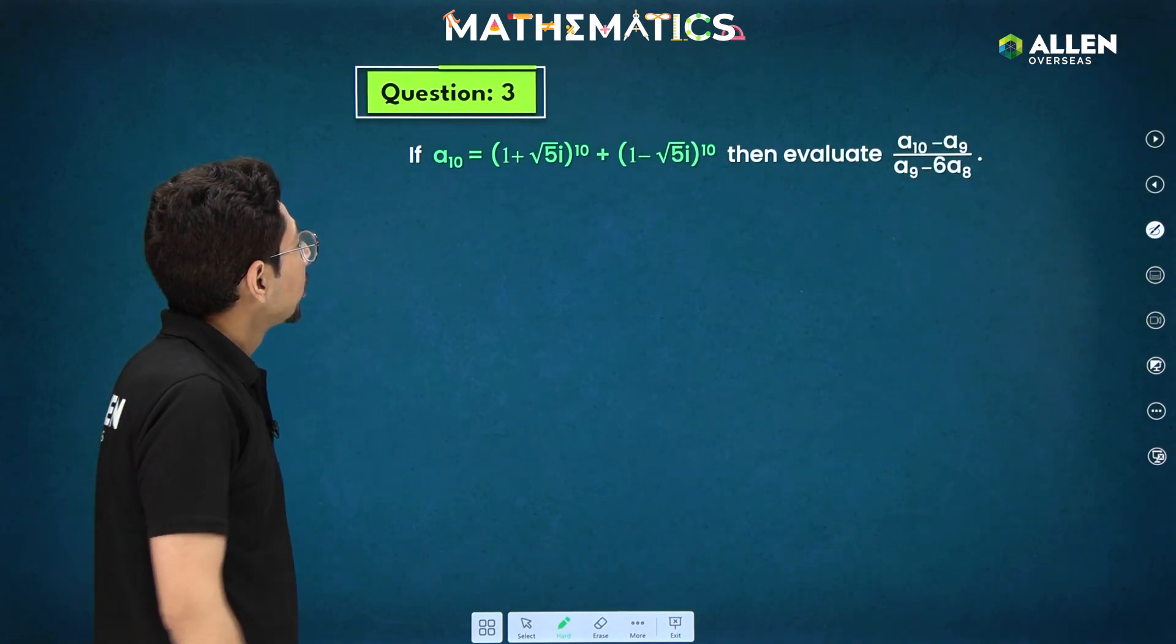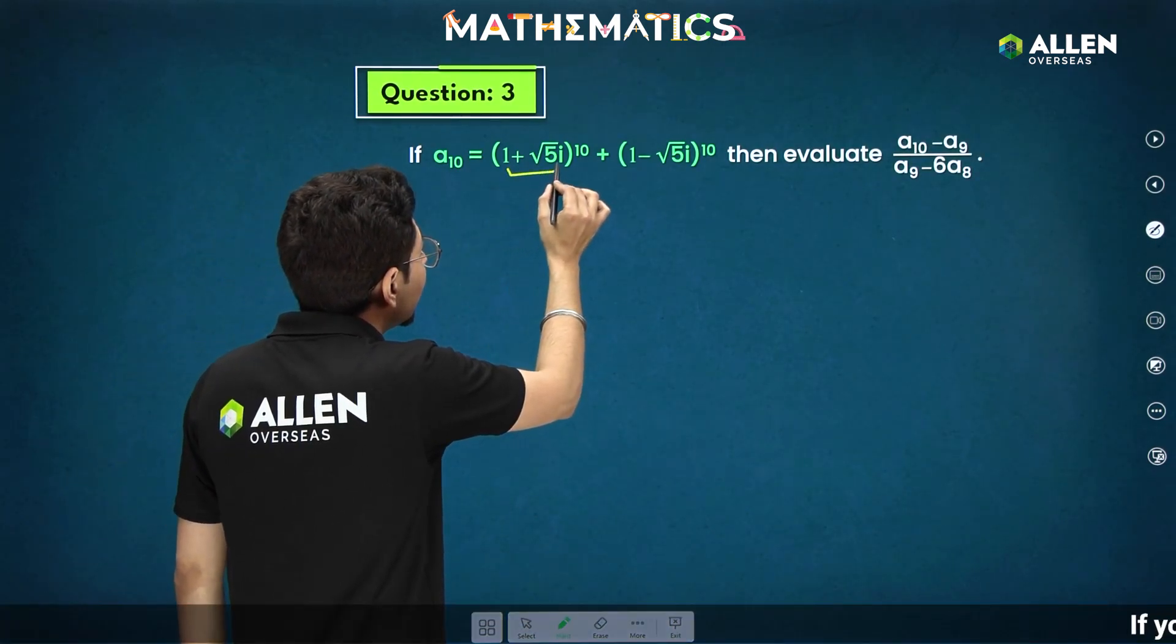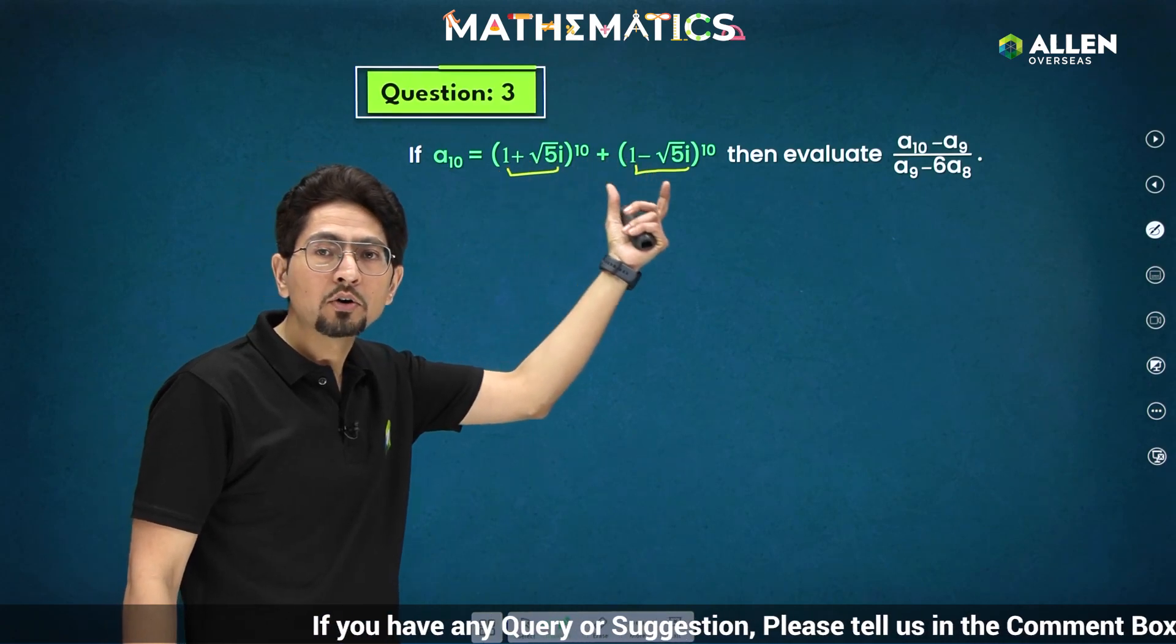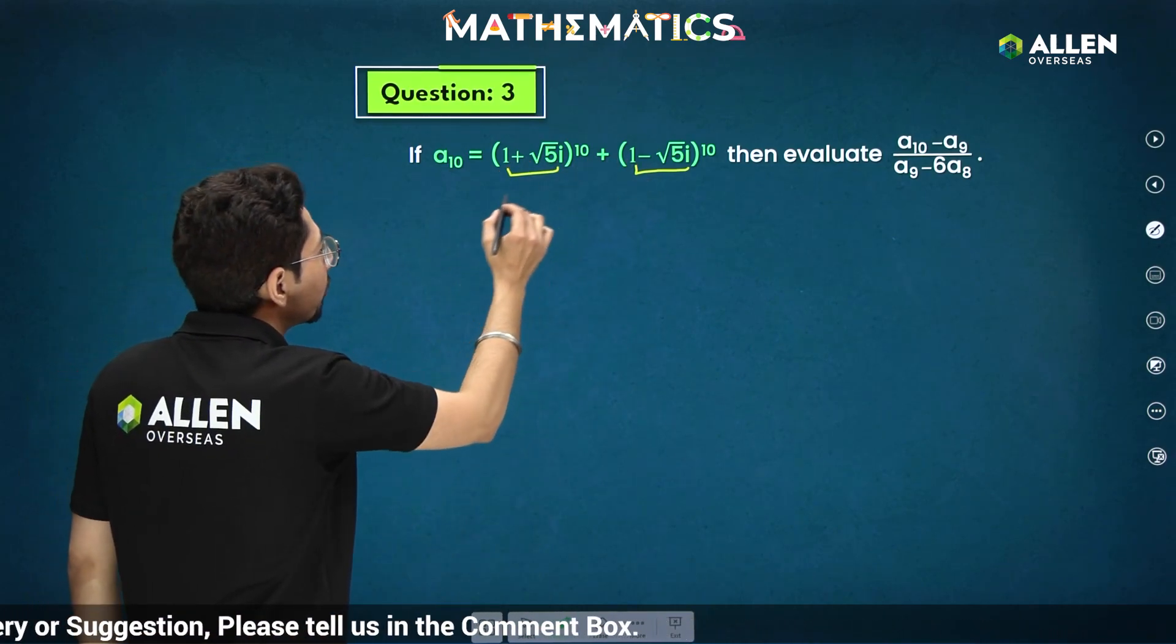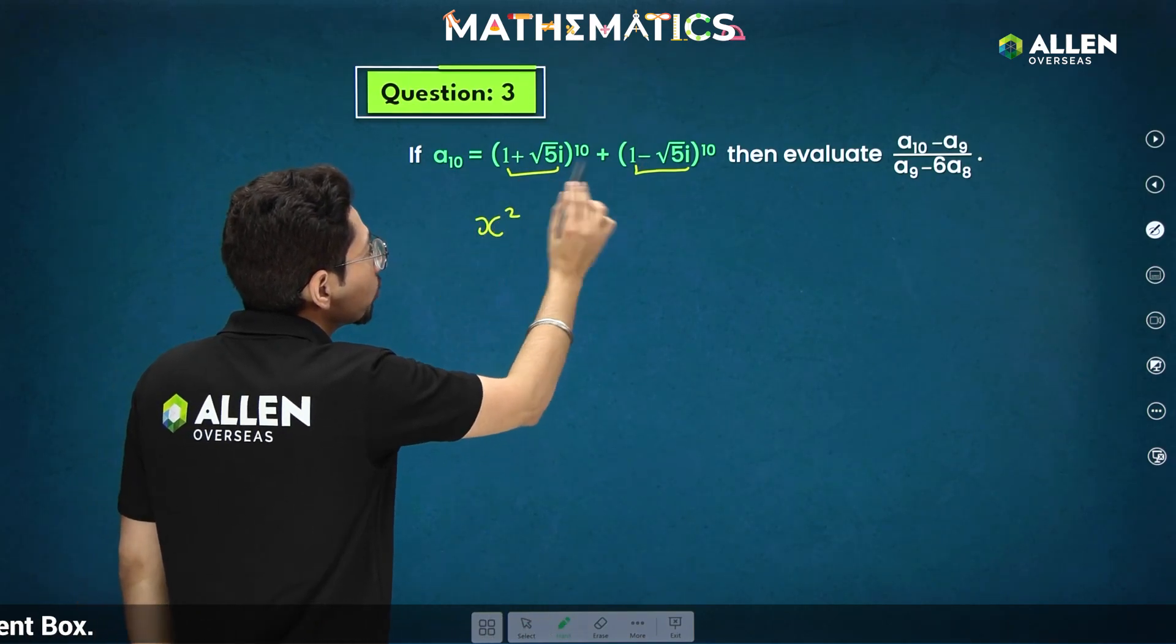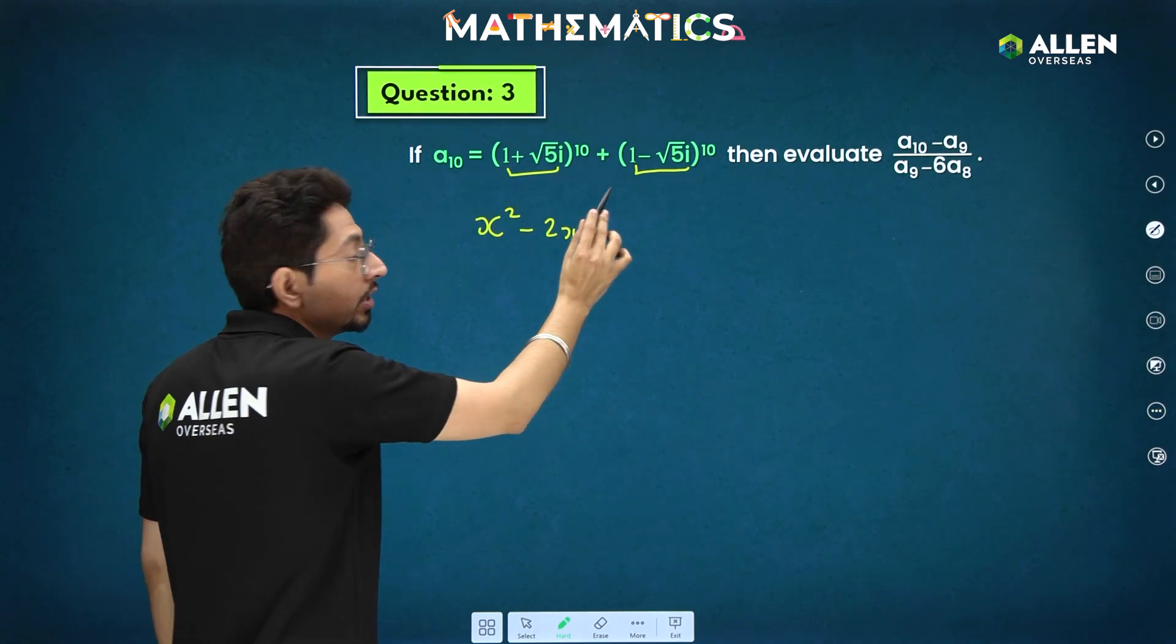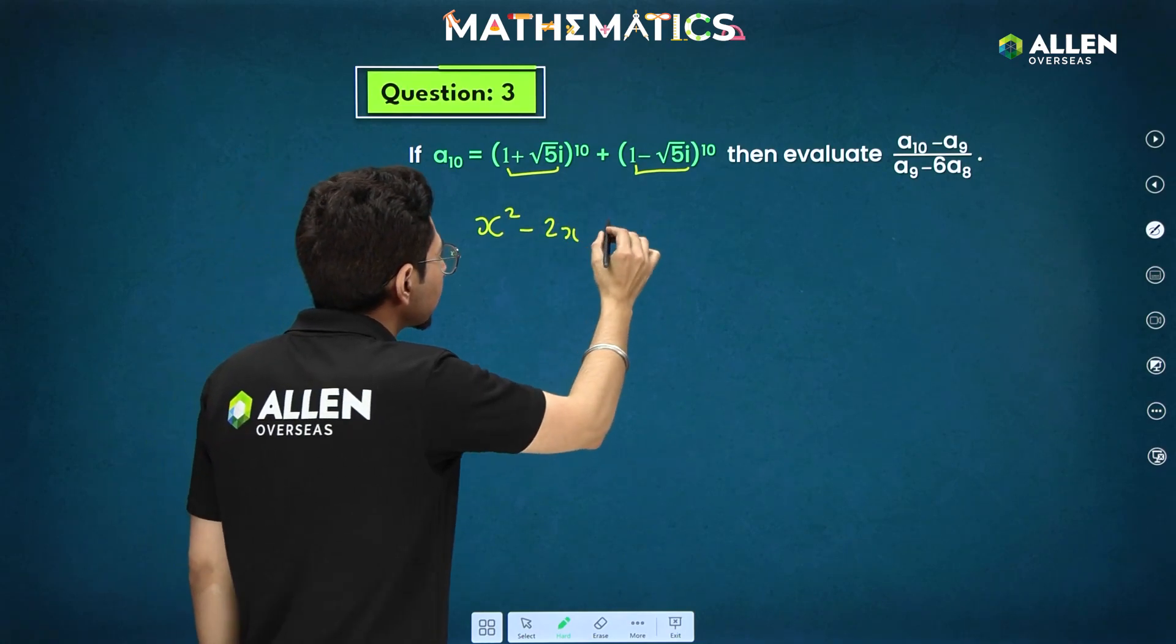Next is another kind of application. Now imaginary roots are given to you and again if I consider alpha and beta only then I directly apply this with respect to Newton's theorem. What will be the equation here? x square minus sum of roots. Sum of roots will be 2 minus 2x plus product of roots which will be 1 plus 5i, 1 minus 5i, iota square which will be 1 plus 5 that is 6.